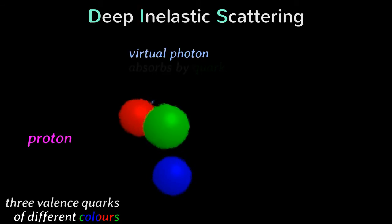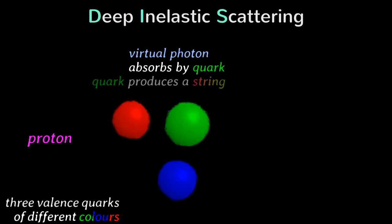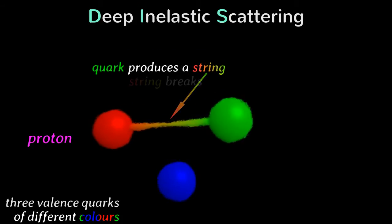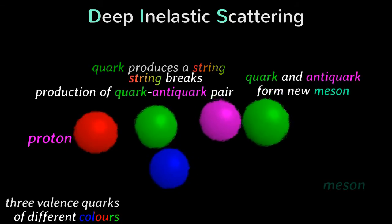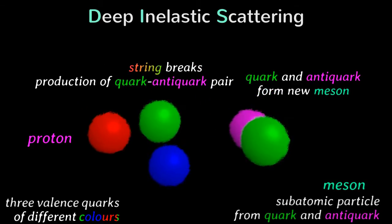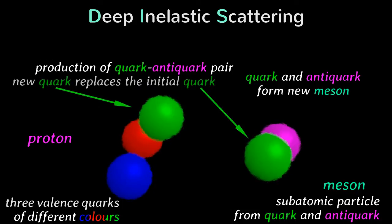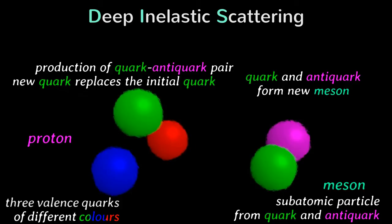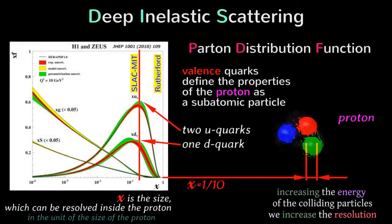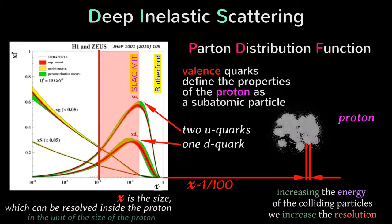The scattering in this case can be imagined as follows. We have the proton, which consists of three quarks with different colors. These quarks define the properties of the proton as a subatomic particle. The virtual photon is absorbed by one quark. The quark obtains energy from the virtual photon and flies out from the proton. This produces a quark-antiquark pair through the breaking of a string. The interacting quark and the antiquark from the pair will form a new subatomic particle — a meson — while the quark from the pair will stay inside the proton and replace the interacting quark. But if we increase the resolution further, we find many other quarks and many gluons.